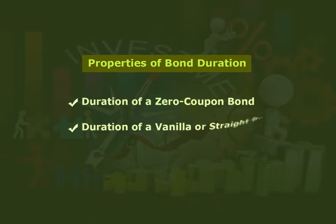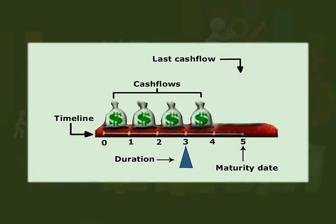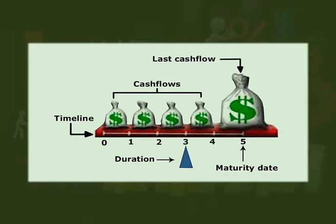Now we will learn about the duration of a vanilla or straight bond. A vanilla bond, commonly known as a straight bond, pays coupons annually and matures in five years. The cash flows consist of five equal annual coupon payments, and the last payment includes the face value of the bond. Unlike the zero coupon bond, the straight bond pays coupon payments throughout its life and therefore is generally shorter in effective duration — it pays back cash flows sooner.